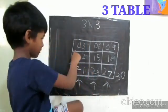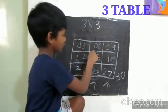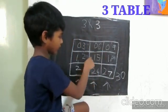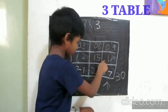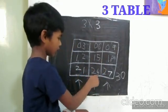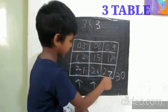Now look, 1 times 3 is 3, 2 times 3 is 6, 3 times 3 is 9, 4 times 3 is 12, 5 times 3 is 15, 6 times 3 is 18, 7 times 3 is 21, 8 times 3 is 24, 9 times 3 is 27, 10 times 3 is 30.